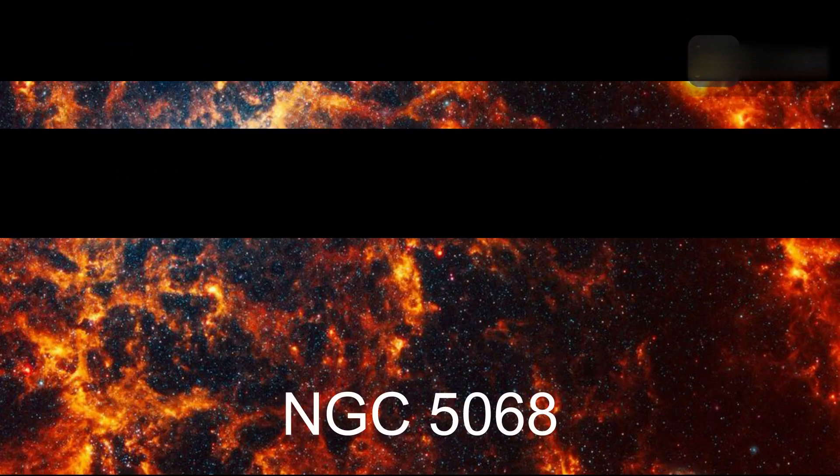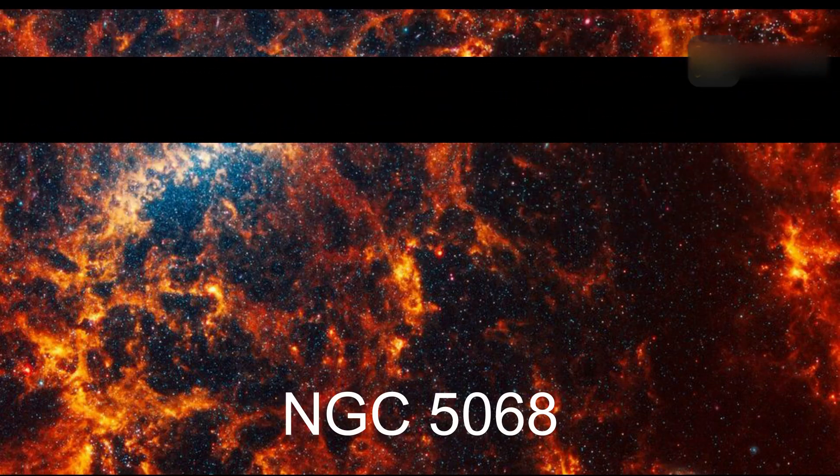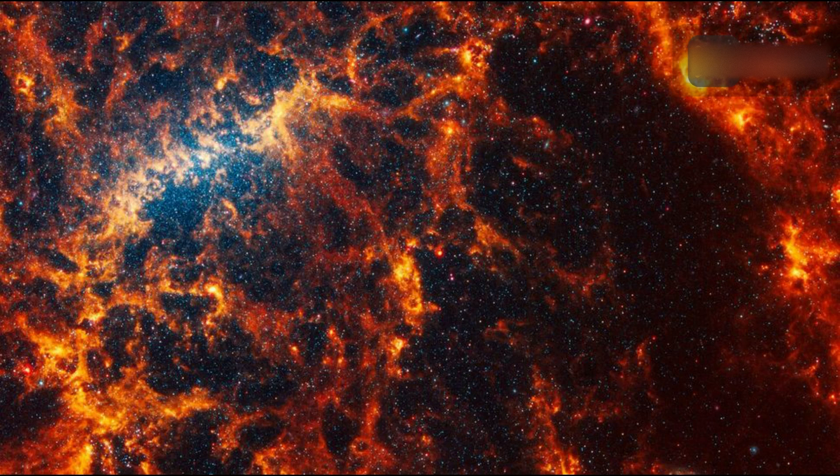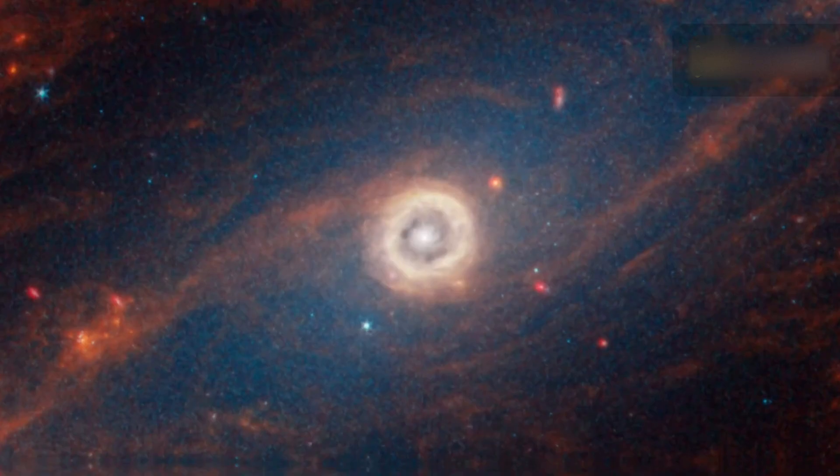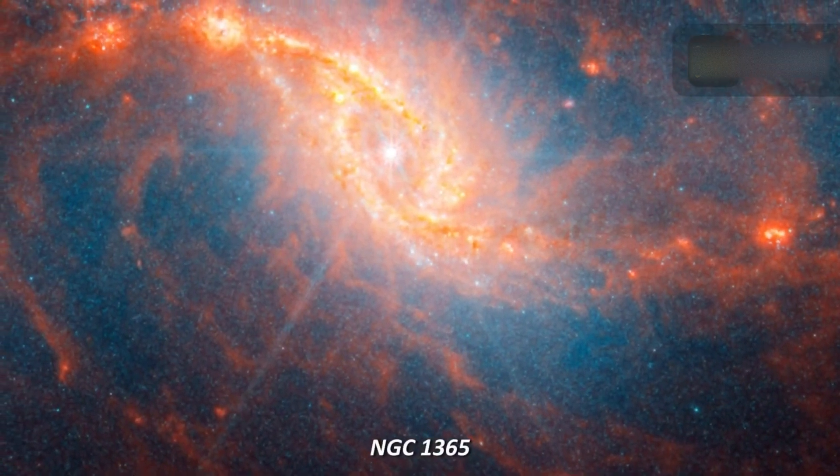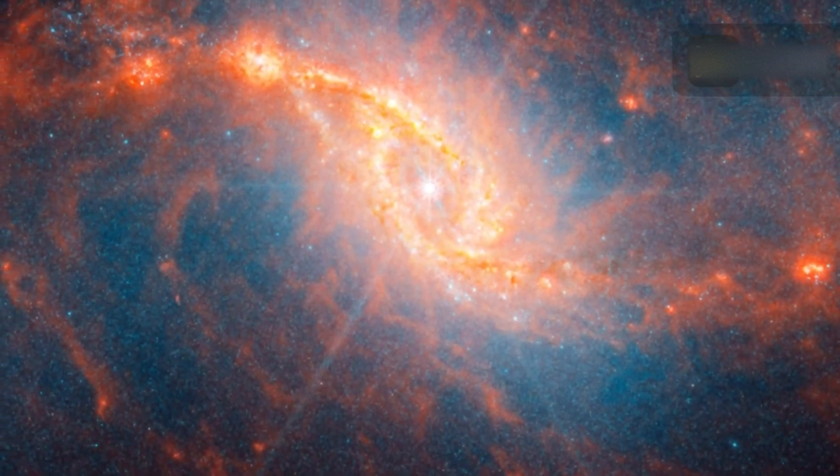One of the galaxies imaged by the JWST as part of the PHANGS program, NGC 5068, which is located 20 million light-years from Earth in the constellation Virgo, appears to be dominated by such large voids. NGC 1365, which is located 56 million light-years away from Earth in the constellation Fornax.